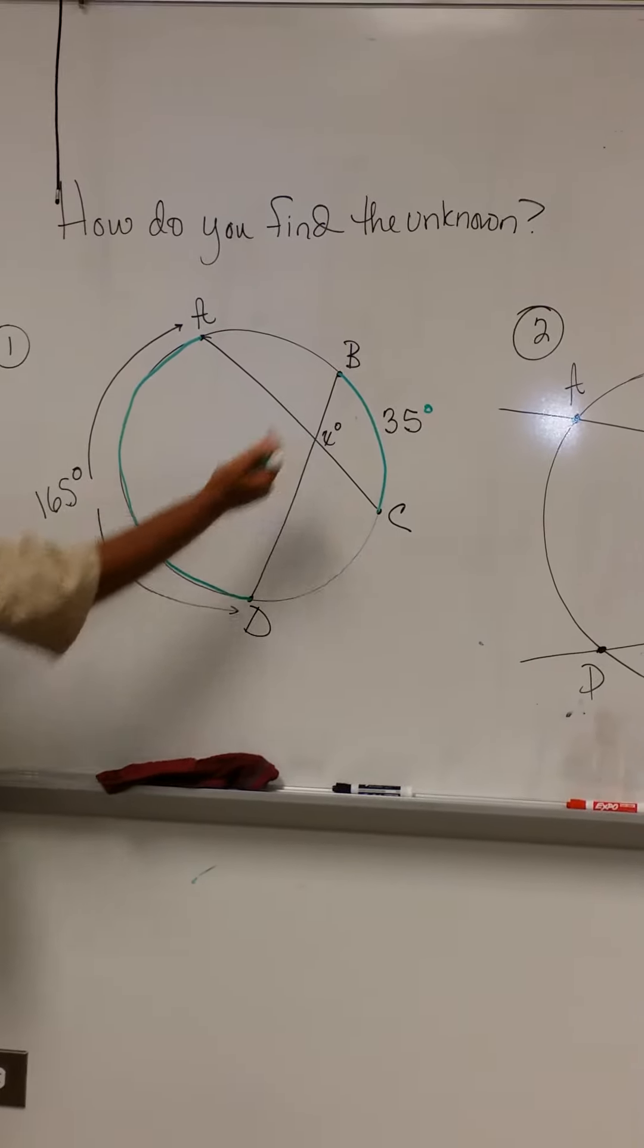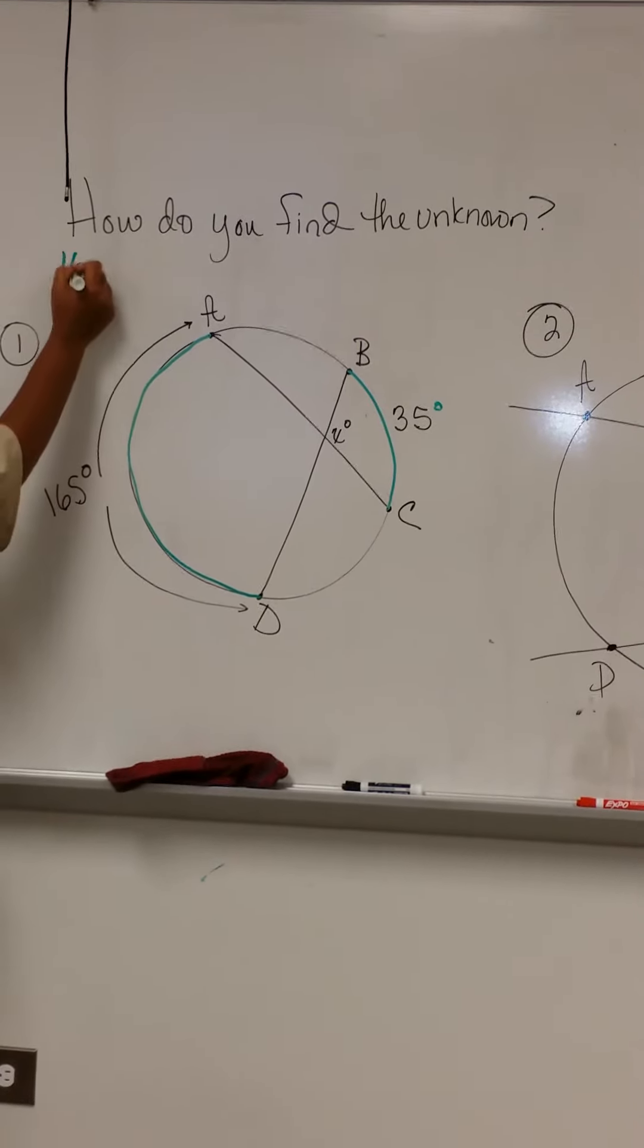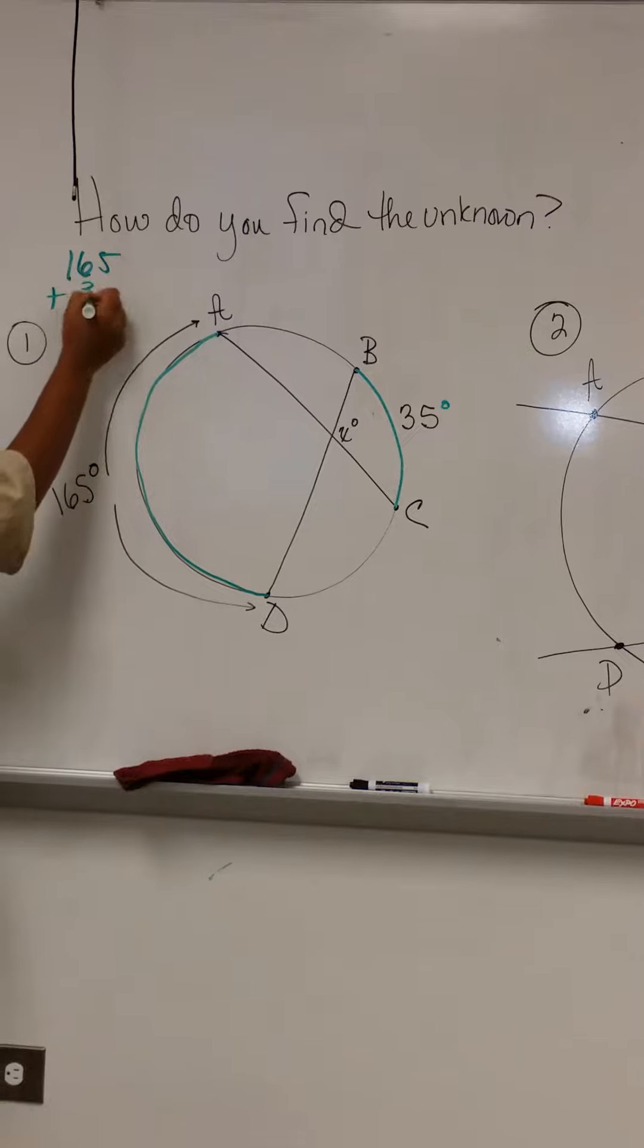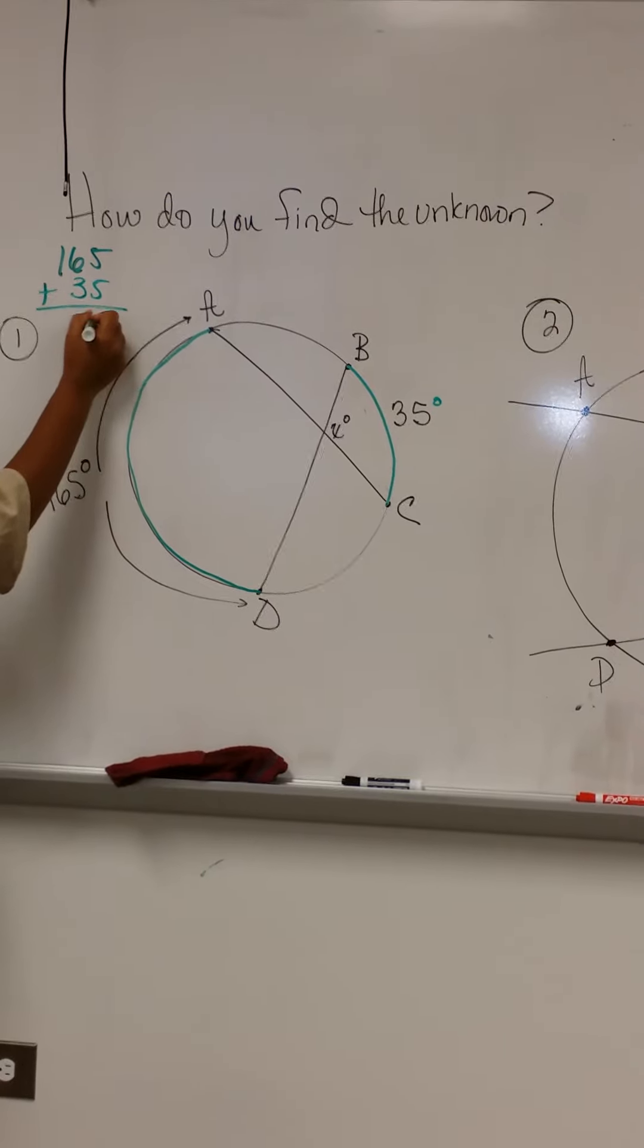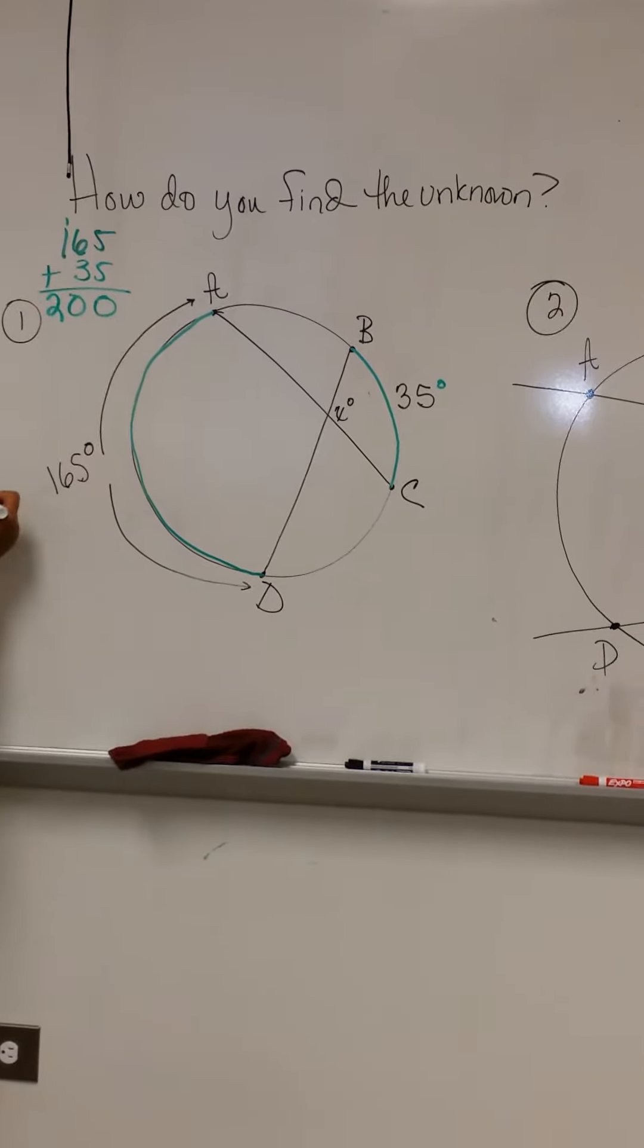And that will give us the measure of the unknown angle within the circle. So 165 plus 35, and then we'll take 200 and divide it by two,